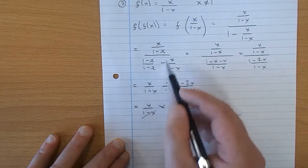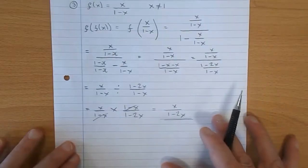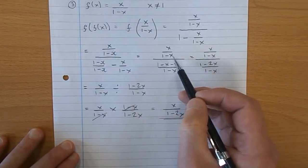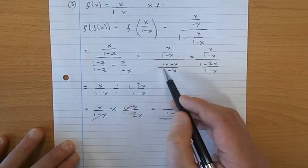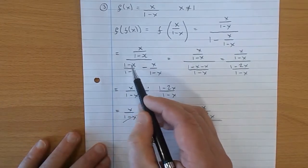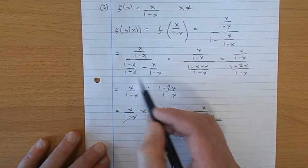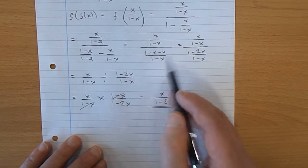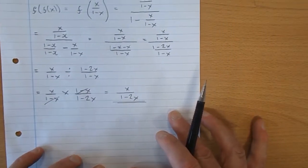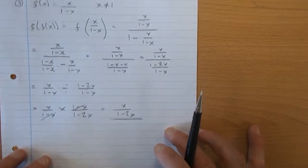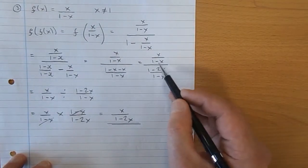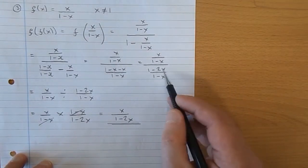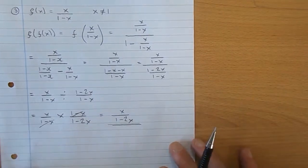Okay. So we have, here we have x over 1 take x, not really doing anything to that. But down here, we have 1 take x, take x over what is now a common denominator. 1 take x, take x over 1 take x. And that's now simplifying a little bit now because we have x over 1 take x, which we've not done anything to. 1 take 2x over 1 take x.